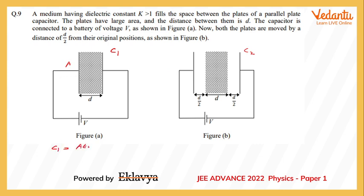C1 will be written as A epsilon naught by D into K, which I can write as C naught into K, where C naught represents the capacitor with air in between the plates instead of the dielectric.